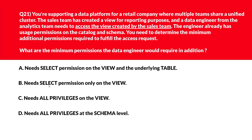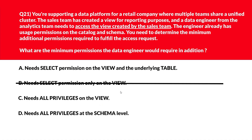We'll move to B. B says needs select permission only on the view. Select on the view alone fails if underlying table access is missing — hence wrong answer. Let's move to option C. C says needs all privileges on the view. All privileges on view is excessive and doesn't guarantee table access — wrong answer.